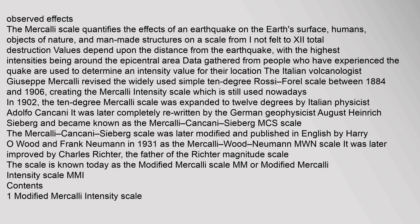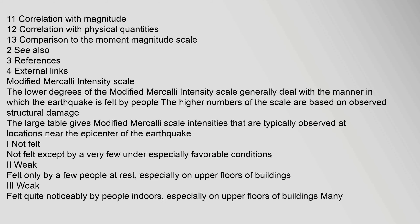The 10-degree Mercalli Scale was expanded to 12 degrees by Italian physicist Adolfo Cancani. It was later completely rewritten by German geophysicist August Heinrich Seberg and became known as the Mercalli-Cancani-Seberg (MCS) Scale. The MCS Scale was later modified and published in English by Harry O. Wood and Frank Newman in 1931 as the Mercalli-Wood-Newman (MWN) Scale. It was later improved by Charles Richter, the father of the Richter magnitude scale. The scale is known today as the Modified Mercalli Intensity Scale (MMI).